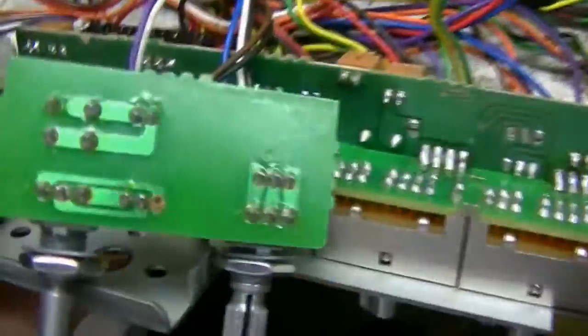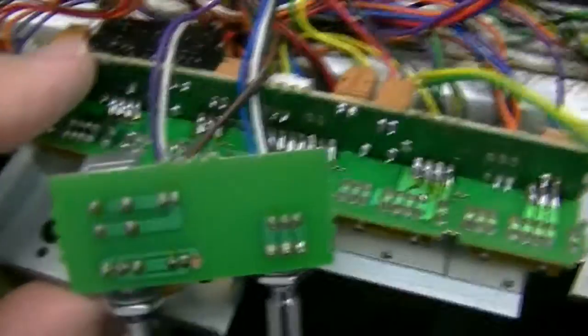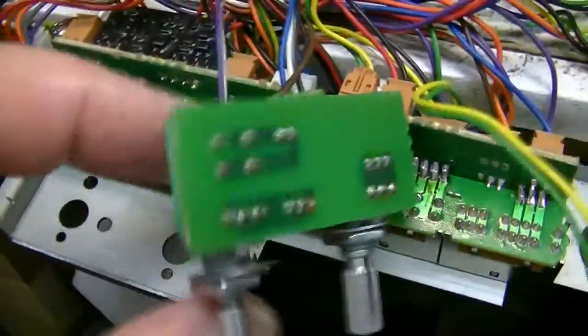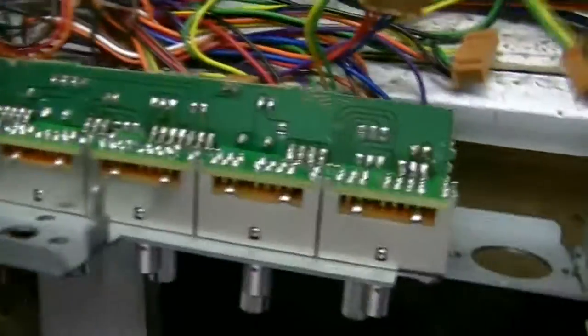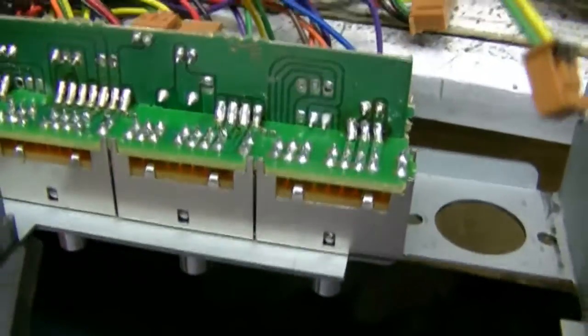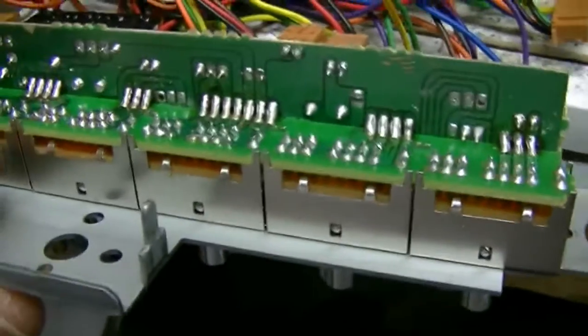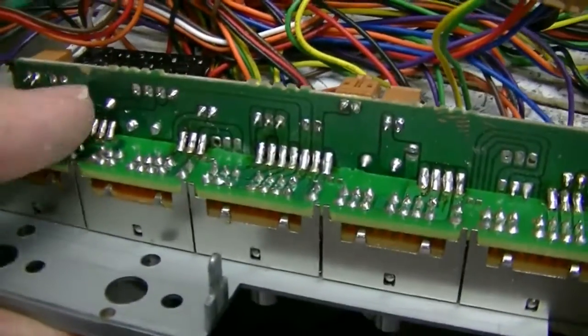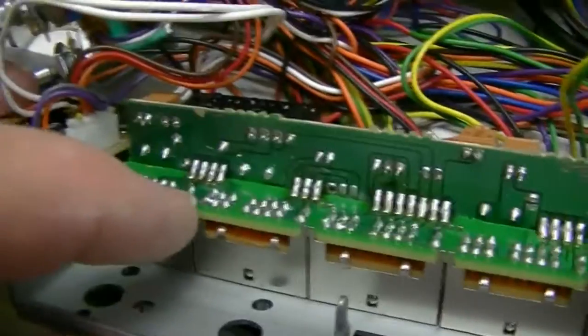So I pulled this all apart, unsoldered all of this, took the switchboard and the control board apart, and looked for shorts. Needless to say, I couldn't find one, so the only thing I saw was maybe shoddy soldering between these two boards, so I cleaned all the old soldering up and re-soldered the boards together.